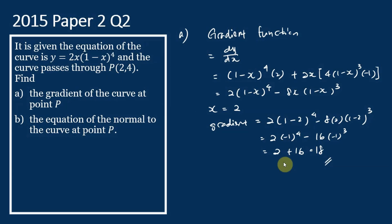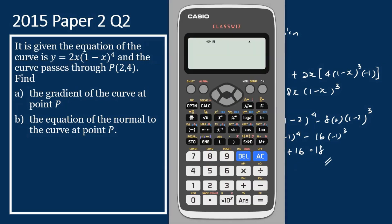Now let's use the Casio FX570EX ClassWiz calculator to verify our answer. In the calculator, you can see buttons for integration, and above those, differentiation. To access the differentiation function, we use shift then differentiation. On the screen, it shows the differentiation of x.